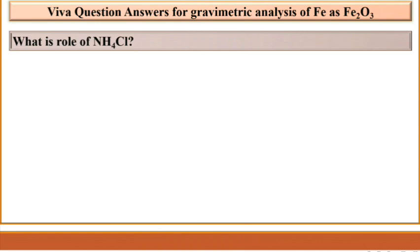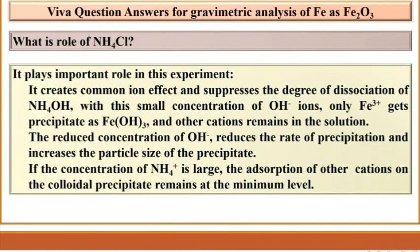What is the role of NH₄Cl? It plays an important role in this experiment. It creates a common ion effect and suppresses the degree of dissociation of NH₄OH. With this small concentration of OH⁻ ions, only Fe³⁺ gets precipitated as Fe(OH)₃ and other cations will remain in solution. The reduced concentration of OH⁻ reduces the rate of precipitation and increases the particle size of the precipitate. If the concentration of NH₄⁺ is large, the adsorption of other cations on the colloidal precipitate remains at a minimum level.